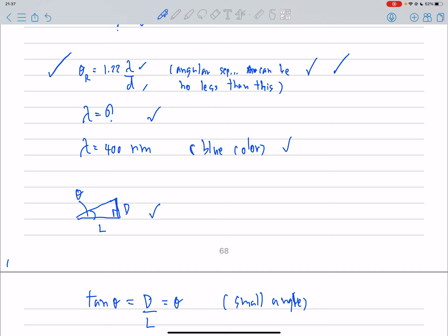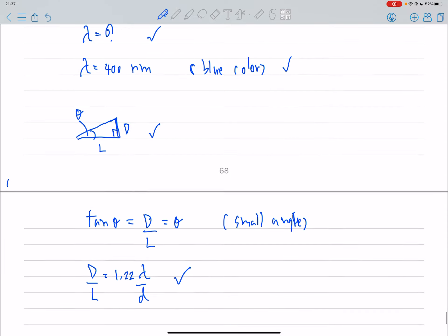And from trigonometry, for a small angle, theta is equal to big D over L.